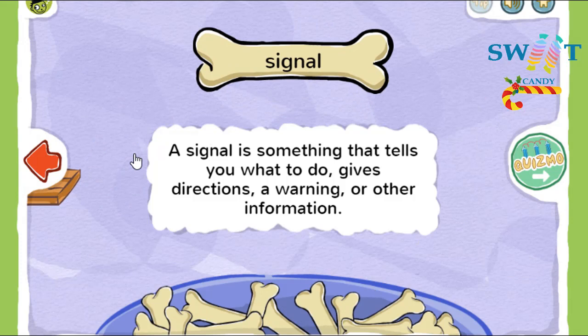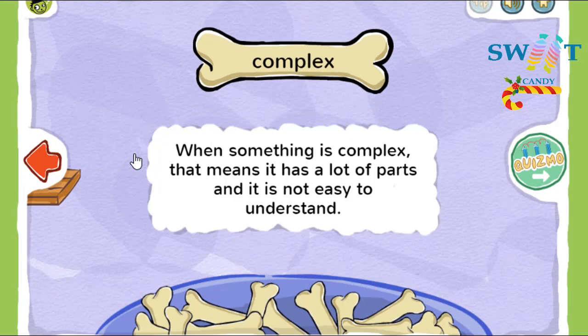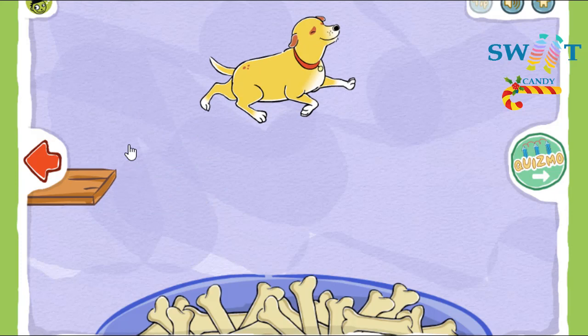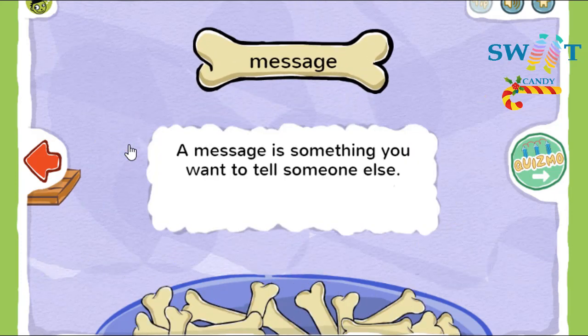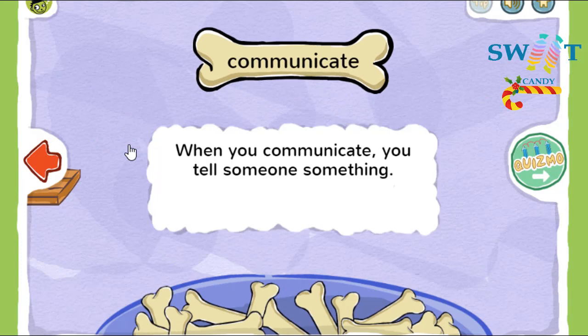A signal is something that tells you what to do, gives directions, a warning, or other information. When something is complex, that means it has a lot of parts and is not easy to understand. A message is something you want to tell someone else. When you communicate, you tell someone something.